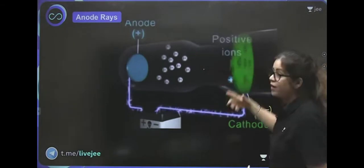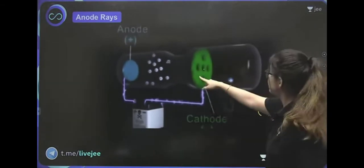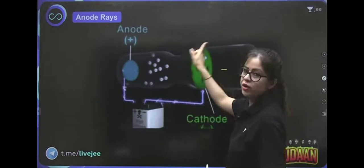What is the significance of the perforated cathode? We have done it so that we don't stop the path and we can study the properties. They can pass through.